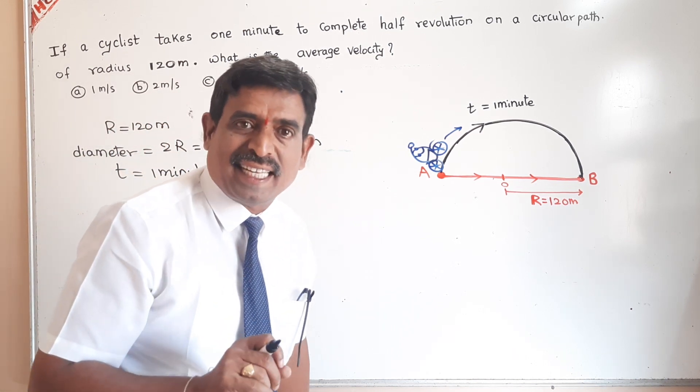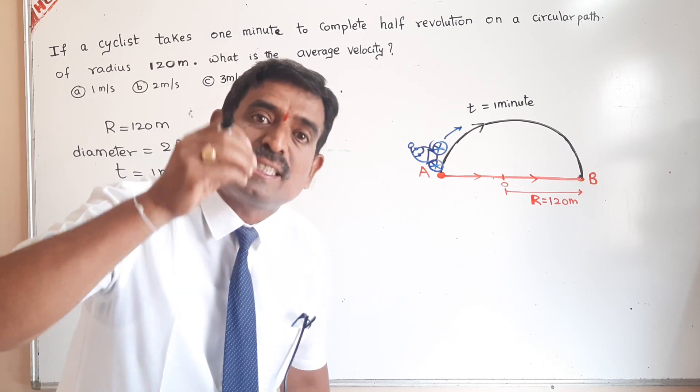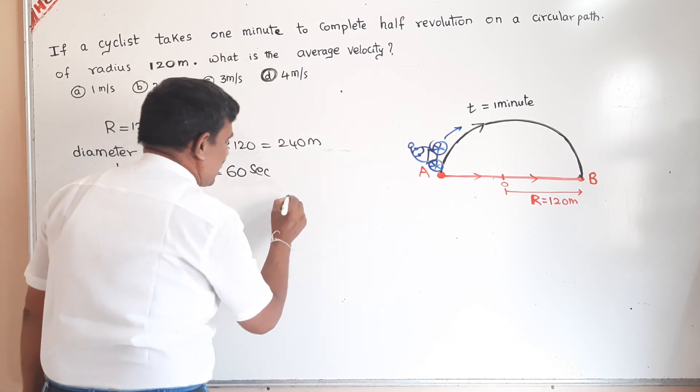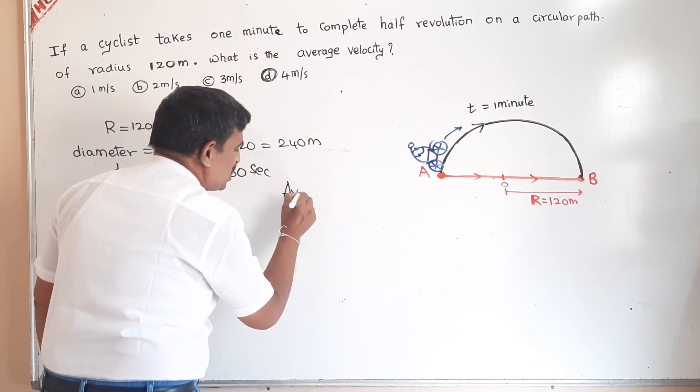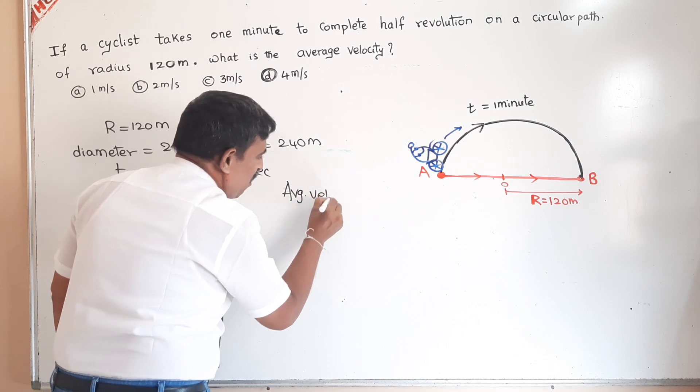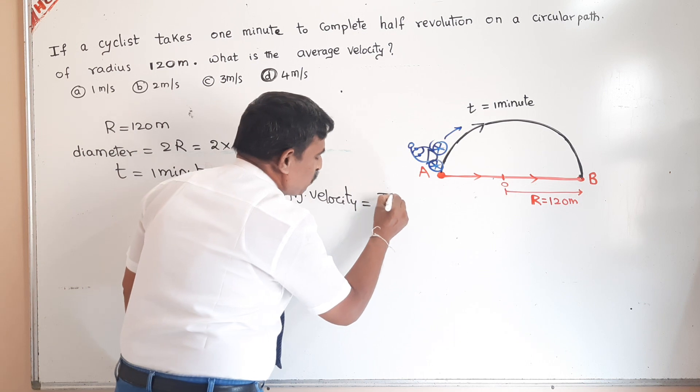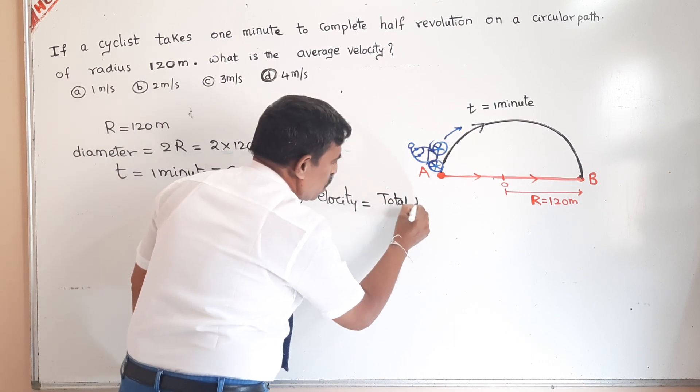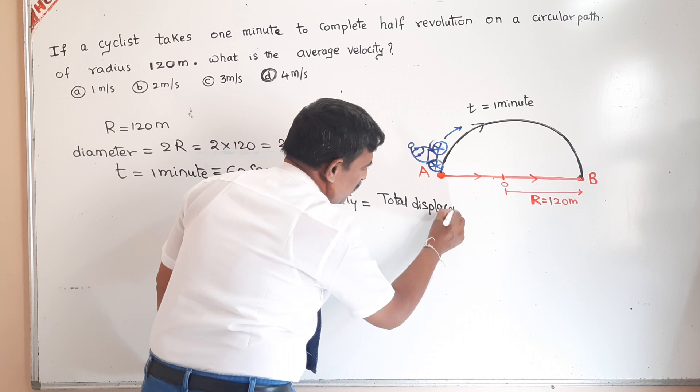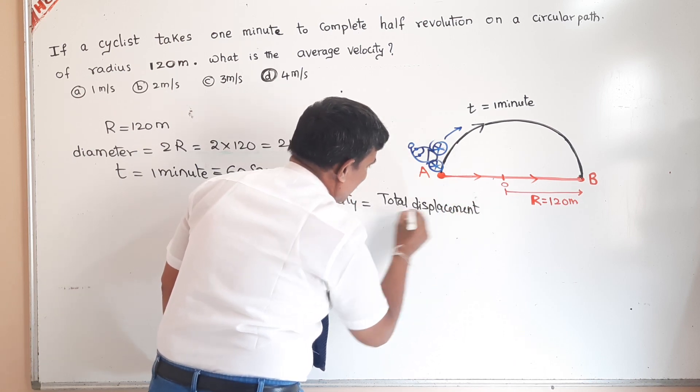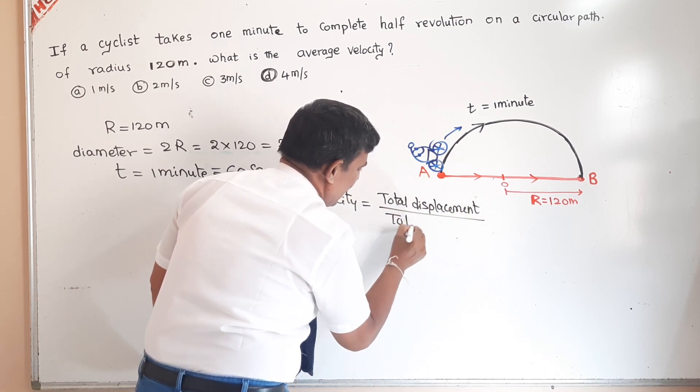Average velocity means total displacement by time taken. Average velocity is equal to total displacement by total time.